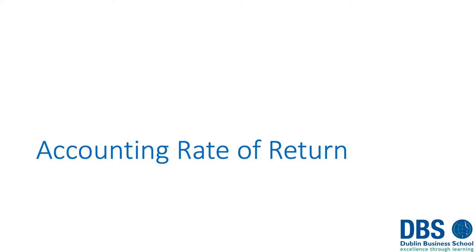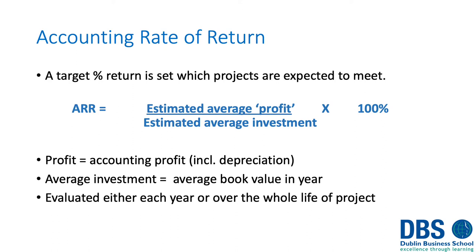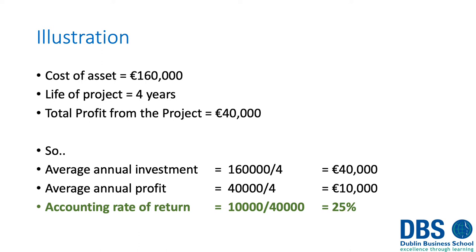The second non-discounting method is the Accounting Rate of Return (ARR): estimated average profit divided by estimated average investment, multiplied by 100. Profit here includes depreciation, and average investment is the average book value of the assets. For example, if an asset costs €160,000 with a four-year life and total profit of €40,000: the average investment is €160,000 ÷ 4 = €40,000 per year; average profit is €40,000 ÷ 4 = €10,000. The ARR is therefore €10,000 ÷ €40,000 = 25%.